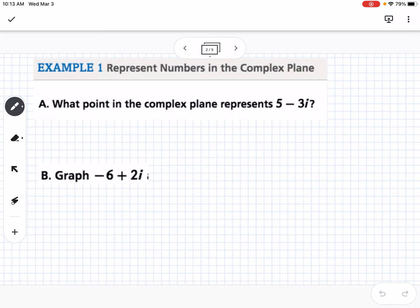So example one says, what point in the complex plane represents 5 minus 3i, and also we're graphing negative 6 plus 2i? So what we need to understand is if we're graphing a complex number, this is the real axis, and this is our imaginary axis.